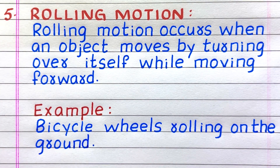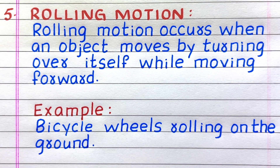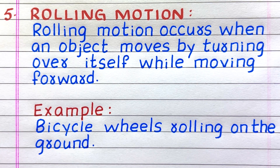Fifth type of motion is rolling motion. Rolling motion occurs when an object moves by turning over itself while moving forward. Example: bicycle wheels rolling on the ground.